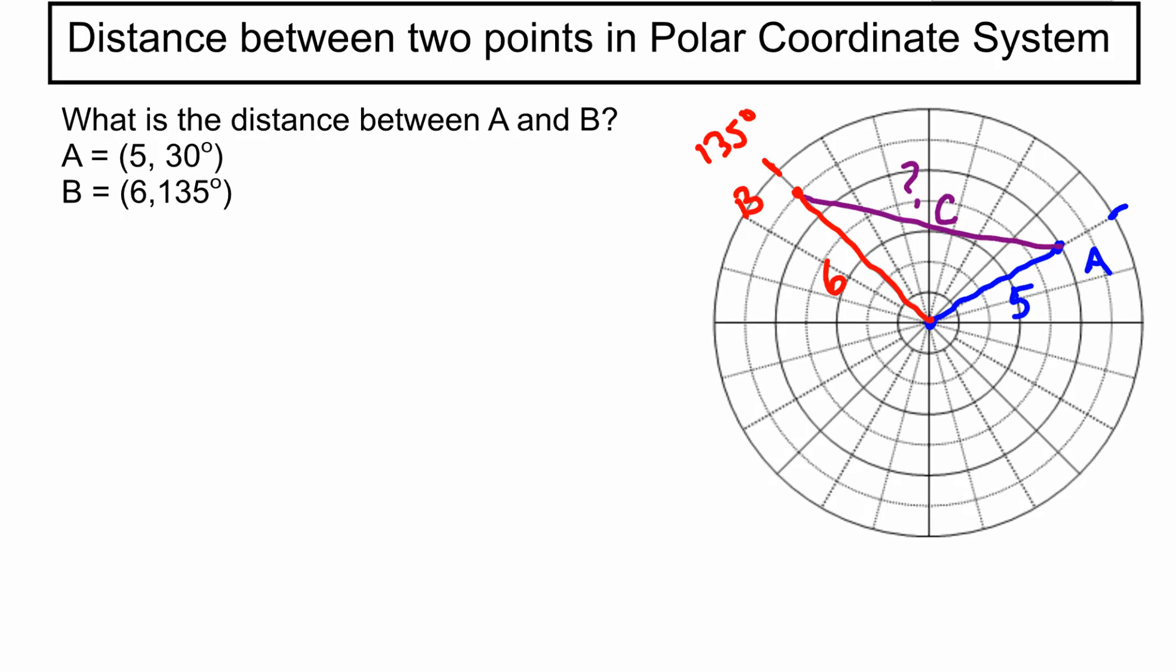And then there's one more thing we can figure out on this. We know this angle in between here because it was 30 degrees to get to 5, 30 degrees. And then it was 135 degrees to get to B. And so then if I subtract those two, I'm going to be left with what's in between there. So if I take 135 minus 30, that's going to be 105. So this angle in between here is 105 degrees.